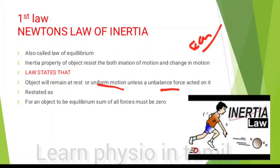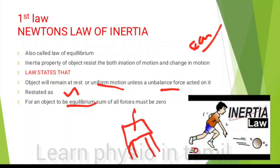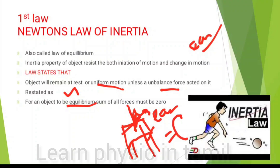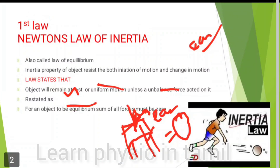Every object in uniform motion has forces acting on it. This is biomechanical. For an object to be in equilibrium, consider a book on a table. We have all forces acting on it. The sum of all forces is equal to zero. This is the law of equilibrium.